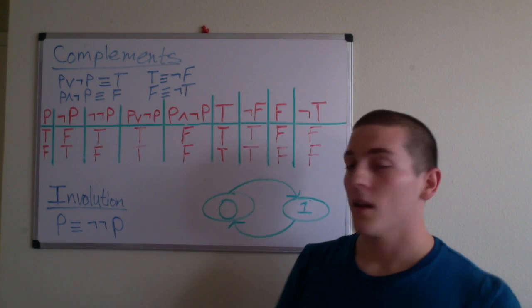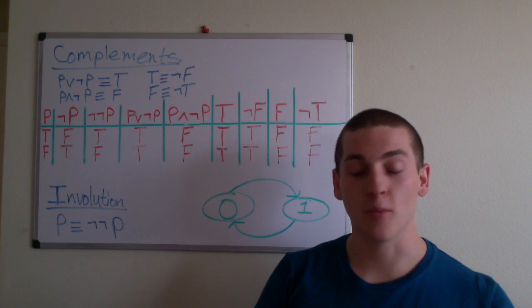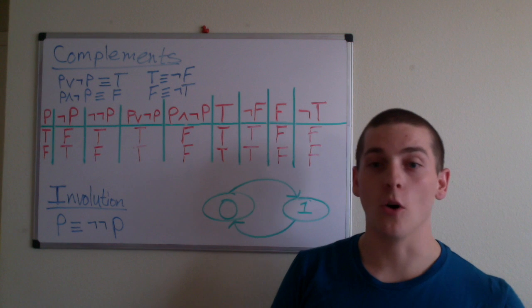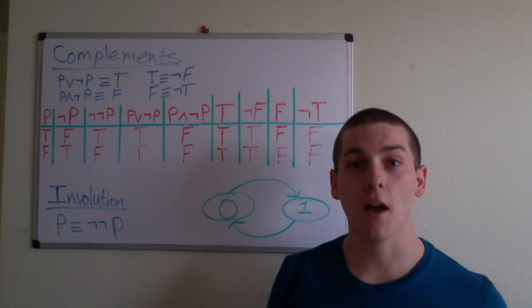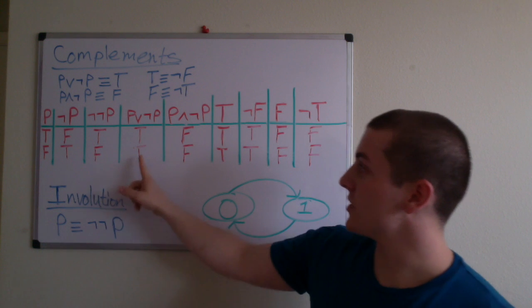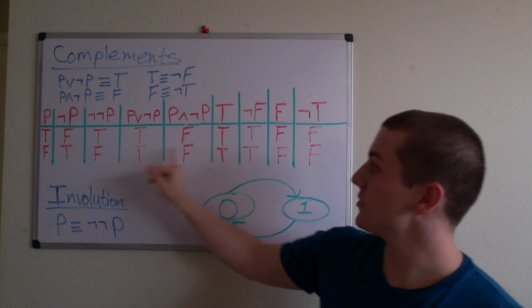It also tells us that a proposition and the conjunction of its negation is always false, which is known as a fallacy. So you can go through this truth table and you'll see that we have a tautology, fallacy, tautology, tautology, fallacy.